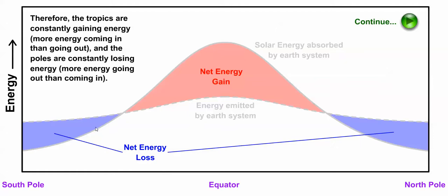Higher latitudes, on the other hand, are constantly losing energy because more energy goes out over the course of a year than comes in.